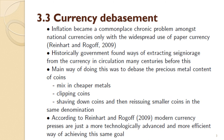Currency debasement is an important historical problem. The comment is made in Reinhart and Rogoff that inflation became a commonplace problem amongst national currencies only with the widespread use of paper currency. Historically, governments found ways of extracting seigniorage from currencies many centuries before this — the main way being to debase the precious metal content of coins by mixing in cheaper metals, clipping coins, or reissuing smaller coins in the same denomination. Modern currency presses are just a technologically more advanced and efficient way of achieving the same goal.